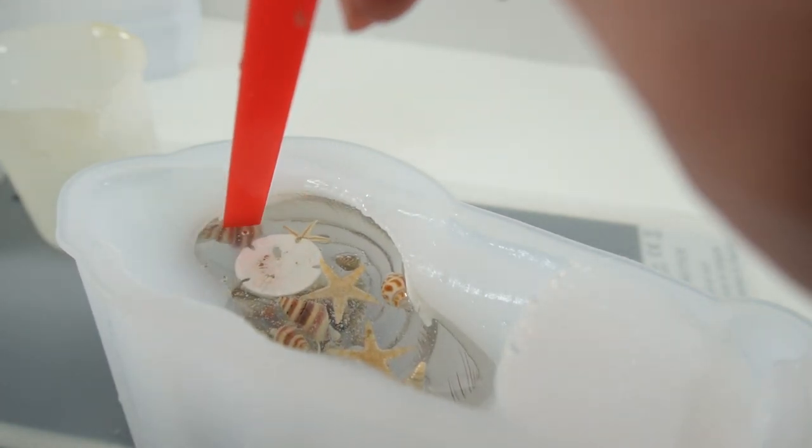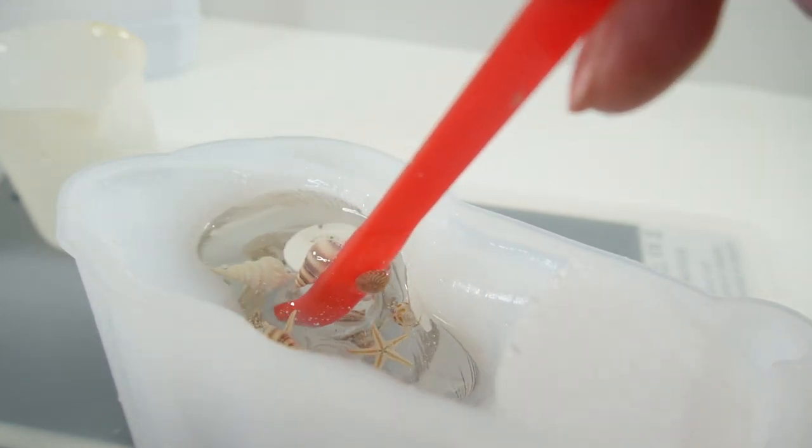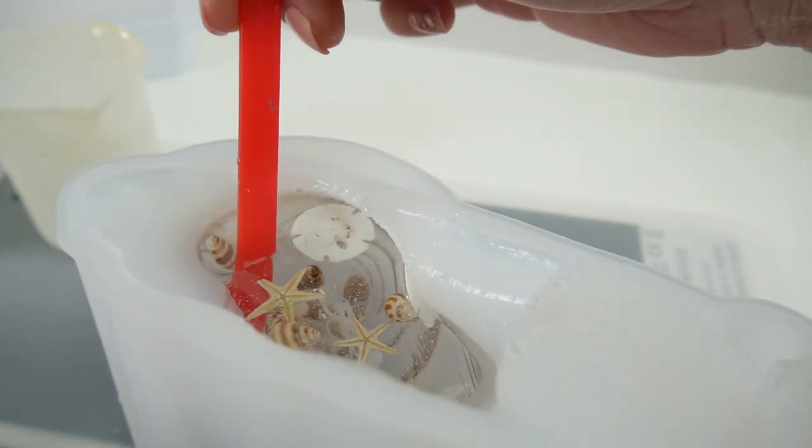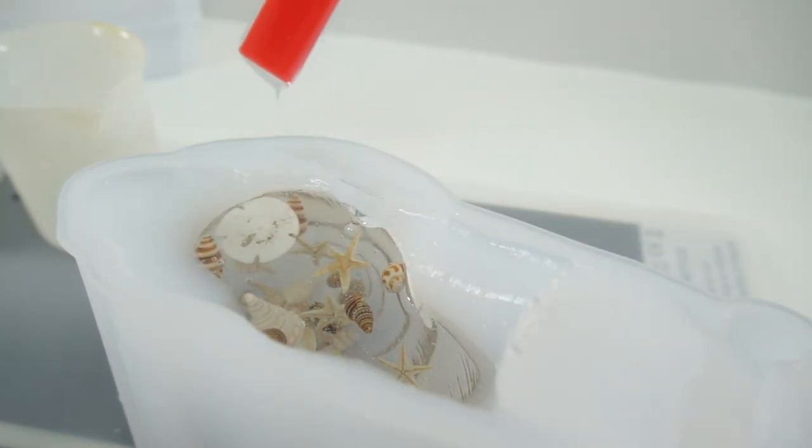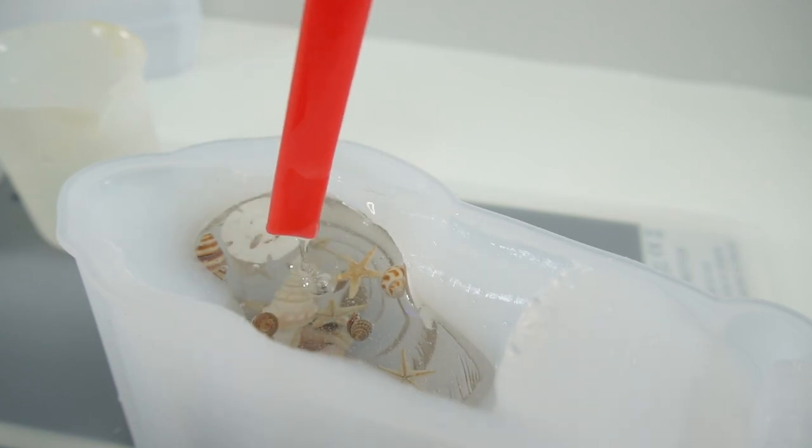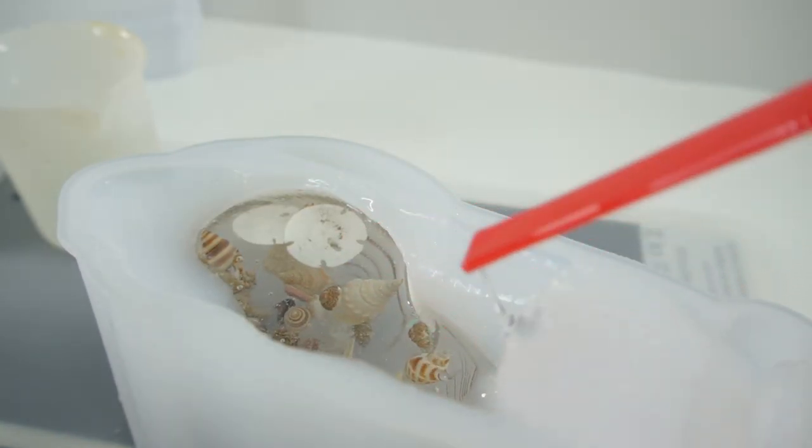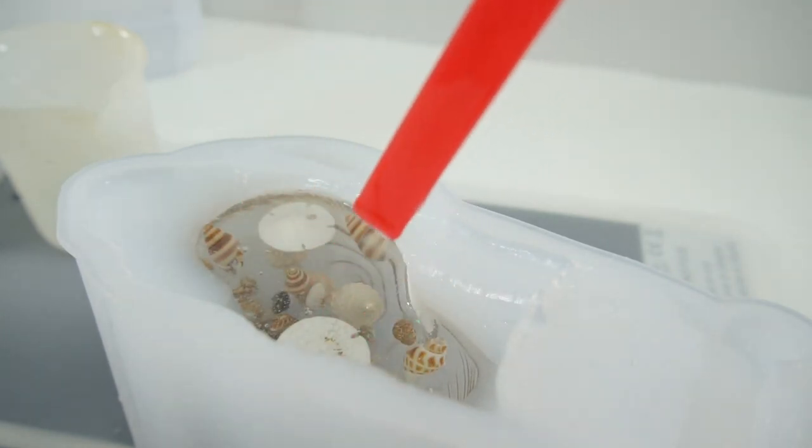I'm also starting to notice that most of the seashells are sinking. So what I'm going to do is as the resin is curing and it gets thicker and more viscous, I'm going to stir the resin a little bit to get the seashells up so that they're floating. So once the resin is thicker they're less likely to sink as far. I'm just going to come back every 10 minutes or so and just give it a light stir.